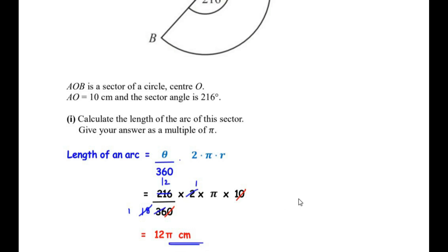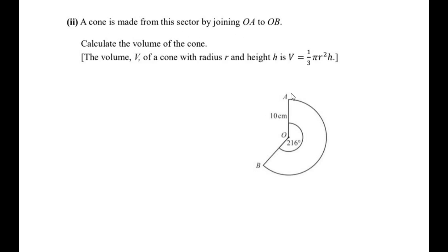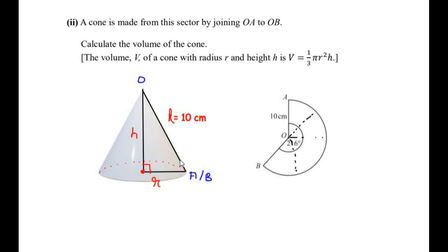For sub-question (b)(ii): a cone is made from the sector by joining OA to OB. We rotate side OA around until it meets OB, forming a cone. When the sector is folded, the sides OA and OB become the slant height of the cone. Therefore the slant height l = 10 centimeters. We still need to find the radius and the perpendicular height of the cone.